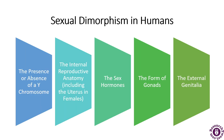Now, sexual dimorphism in humans. In the case of humans, there are five factors that are responsible for determining sex: the presence or absence of a Y chromosome, the internal reproductive anatomy including the uterus in females, the sex organs, the forms of gonads, and the external genitalia.